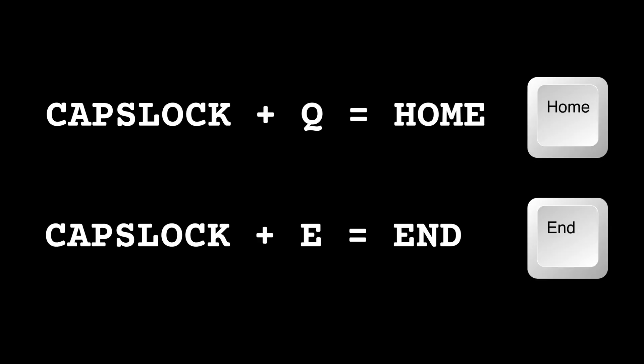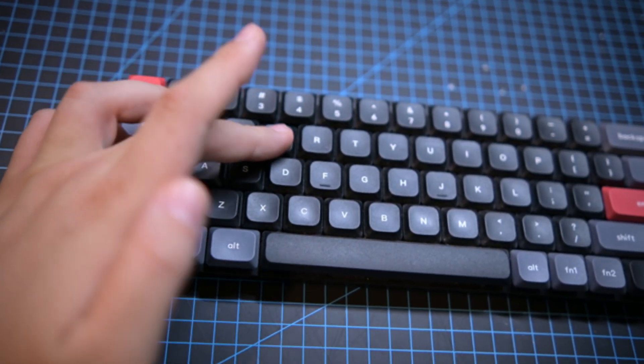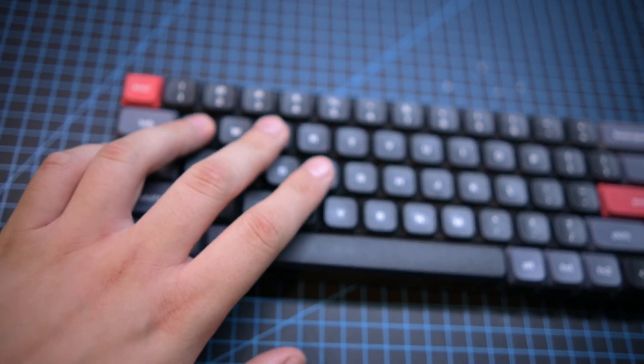Now let's step it up a notch and find more key bindings we can use on a daily basis. Many times I find myself going to the beginning or the end of a line, and to do that I have to take my right hand all the way to the home or end key, which is pretty inconvenient and not ergonomic. So I mapped those keys — the end and the home keys — to caps lock Q and caps lock E. Caps lock Q for home and caps lock E for end, which is pretty handy because sometimes you need to jump your typing cursor to the beginning or the end of the line.